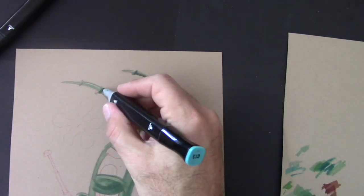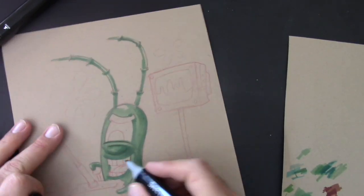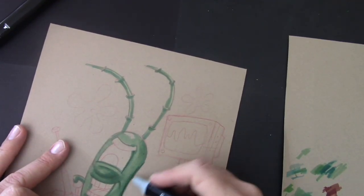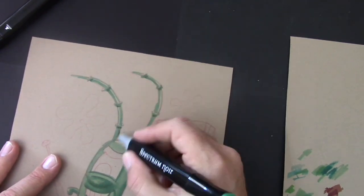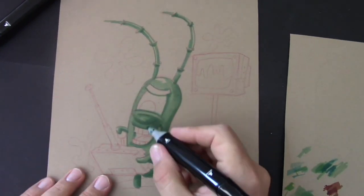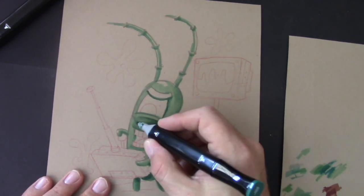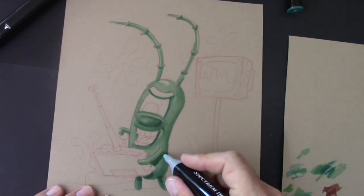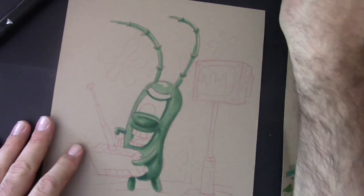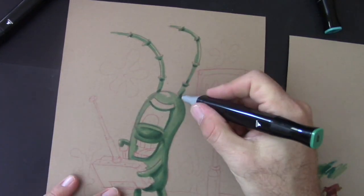As an evil genius, Plankton pretty much works alone. He doesn't really necessarily have a sidekick like a lot of mad scientists do. But he does have his computer wife, Karen, who he built. She's kind of less of a sidekick because she's the one that actually comes up with a lot of the plans for Plankton to obtain the secret formula for Krabby Patties. As you can kind of see in the background here, that little TV monitor, that is Karen, his computer wife. They kind of have this tumultuous relationship. Sometimes they get along and sometimes not so much. But she's always there and she's programmed to help create these dastardly plans to get the secret formula.